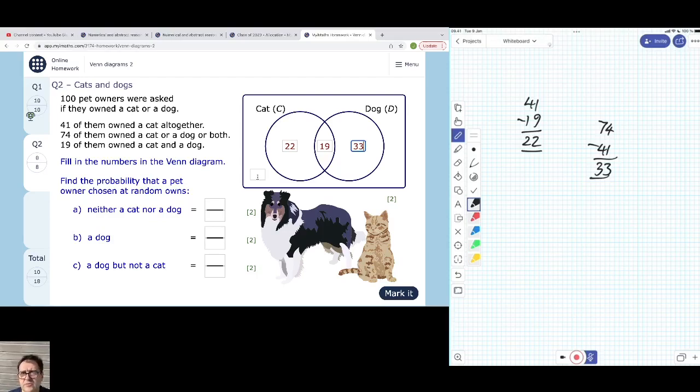We've still got something out here. So what about people who neither own a cat nor a dog? All right, so far we've got 22 plus 19 plus 33 people. So that's making 74 people, I make that. And it says the whole thing was about 100 pet owners. So 100 pet owners were asked if they own a cat or a dog. 100 minus the 74 that do own a cat or a dog gives you 26. So there must be 26 that own neither a cat or a dog—since they're pet owners, own something else. Snake maybe.